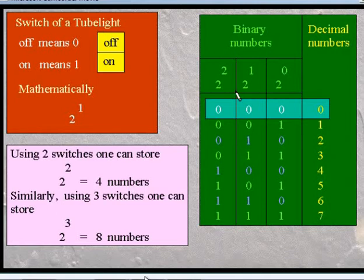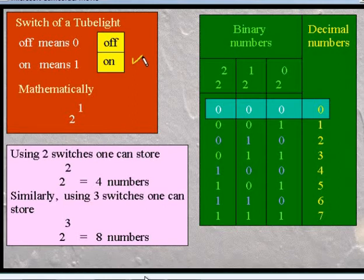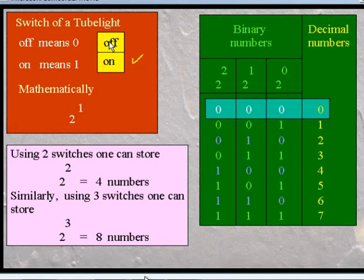This electrical instrument can understand things like ON and OFF states, zero-hold and non-zero-hold, etc. Using this, the computer can remember or store information. Consider an example of a tube light switch. This switch has two states: ON and OFF. If you denote ON as 1 and OFF as 0, then you can store numbers using this switch — two numbers: ON means 1 and OFF means 0.